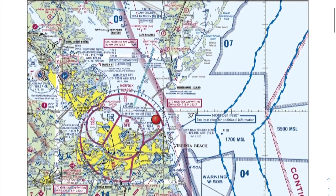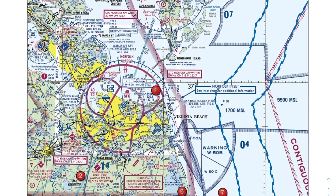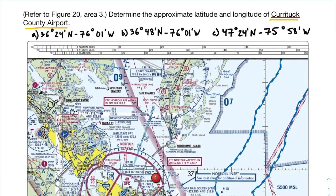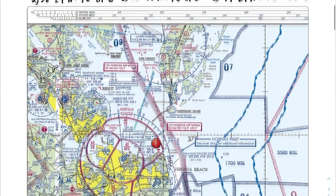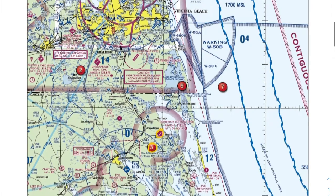With latitude and longitude, if this is your first time looking at a sectional chart, you might be overwhelmed — there's so much information here. You have to know what you're looking for and pick out those important pieces of information. The question is asking for Currituck County Airport. Area 3 tells us where we should be looking, so we find that little red circle with a 3 in it. Currituck Airport is right there — that's where the airport is. Now we need to figure out the latitude and longitude using the information provided in the chart.